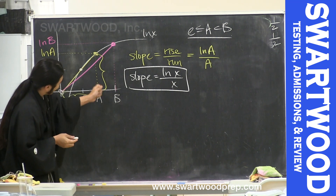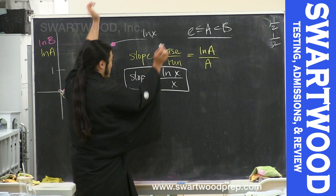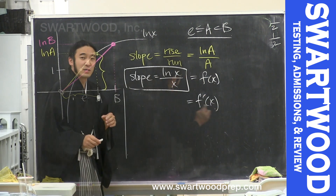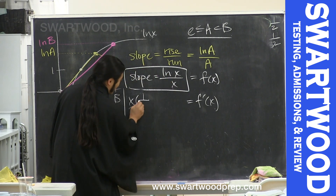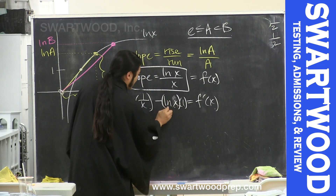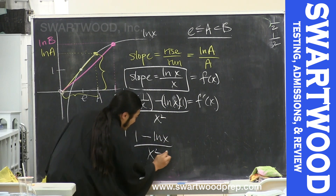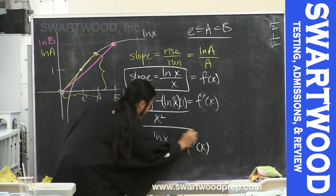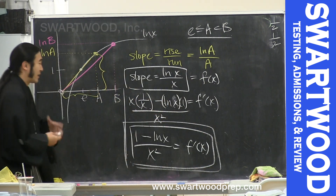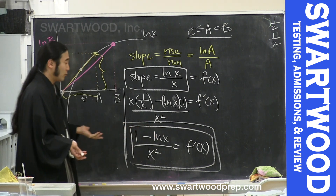Using the quotient rule: the bottom x times the derivative of log(x) which is 1/x, minus the top log(x) times the derivative of the bottom which is 1, all over the bottom squared x². That simplifies to (1 - log(x)) / x². If we're doing regular calculus, we look for where the derivative is 0 to find critical points, which might give a relative max or min. We want to show that as we go from a to b, the slope is decreasing.